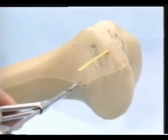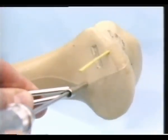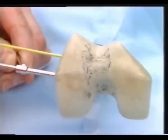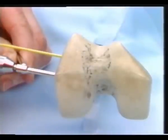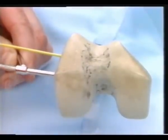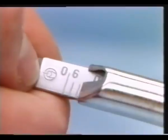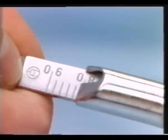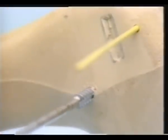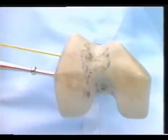Drilling with the 3.2 drill bit. Depth gauge. Cancellous tapping for the first three or four turns. Insertion of the screws.